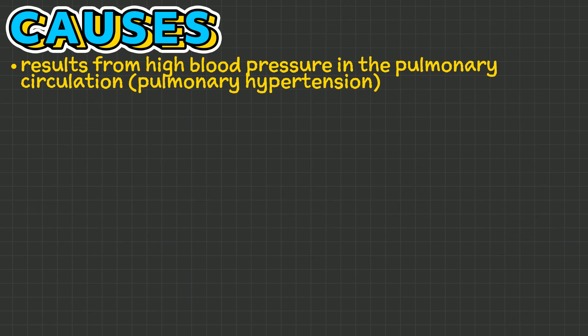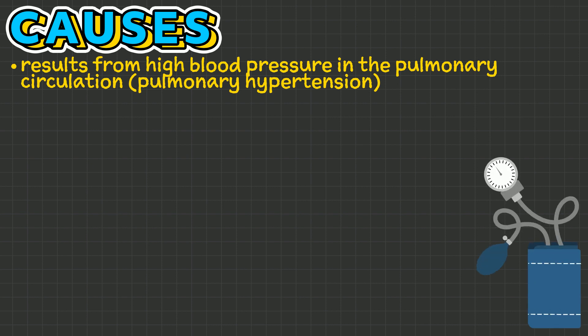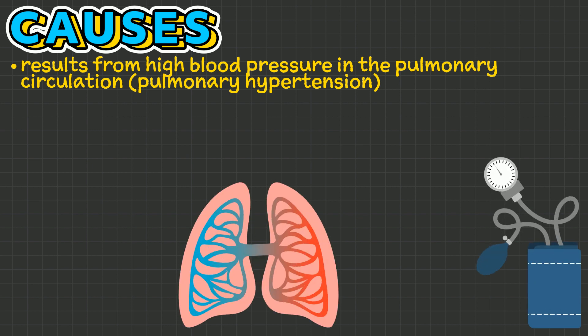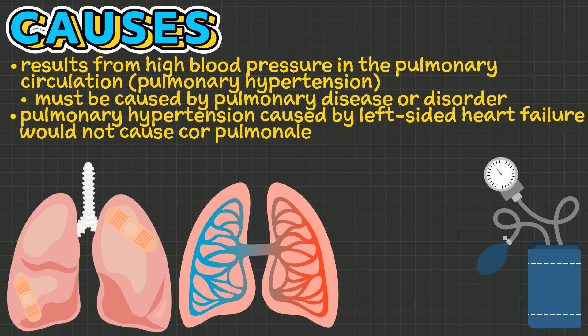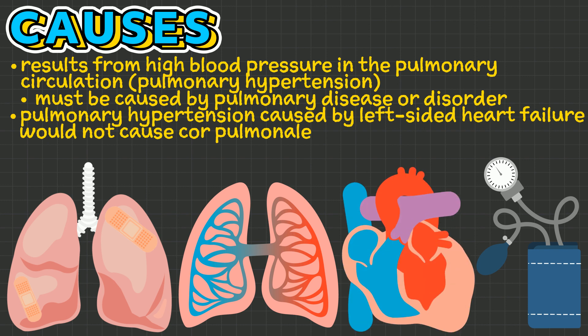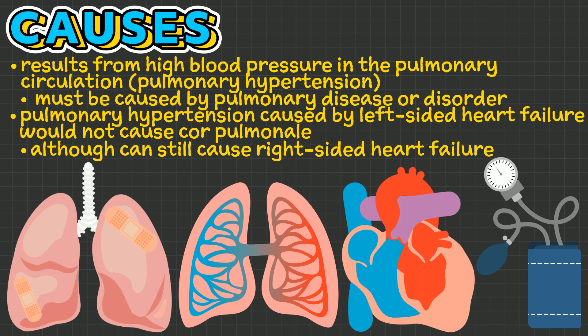Cor pulmonale is a condition resulting from high blood pressure in the pulmonary circulation, also known as pulmonary hypertension, and must be caused by a pulmonary disease or disorder. Therefore, pulmonary hypertension caused by left-sided heart failure would not cause cor pulmonale, although it can still cause right-sided heart failure.